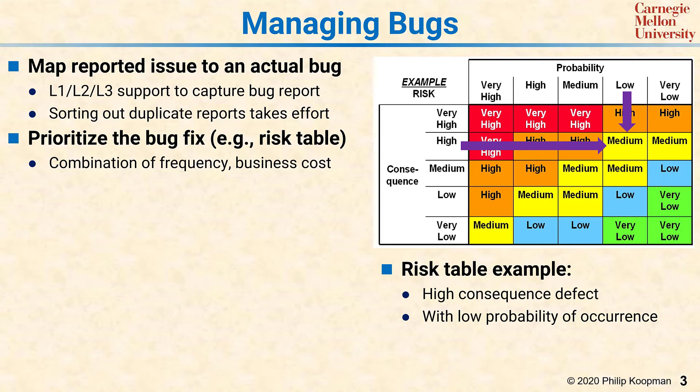You take the probabilities and bin them in a similar way — very high might be it happens every day to every user, very low might be it happens once a year to one user. Looking at the consequence and the probability, you can look at the intersection and figure out what the severity is. Notice that this risk table is asymmetric: it has weighted consequence more highly than probability, so a very severe bug is going to get either a high or very high risk rating regardless of how often it happens.